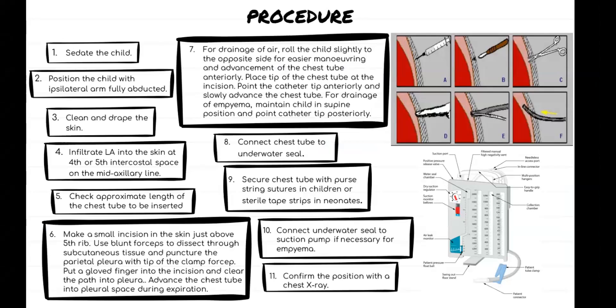Before starting the procedure, get written consent from the parents, explain how the procedure will be done and its complications, then prepare the equipment. Sedate the child with midazolam and position the child with the ipsilateral arm fully abducted. Then clean with chlorhexidine and drape the skin. Infiltrate local anesthesia like lidocaine into the skin at the fourth or fifth intercostal space on the mid-axillary line — this procedure is very painful even in adults.